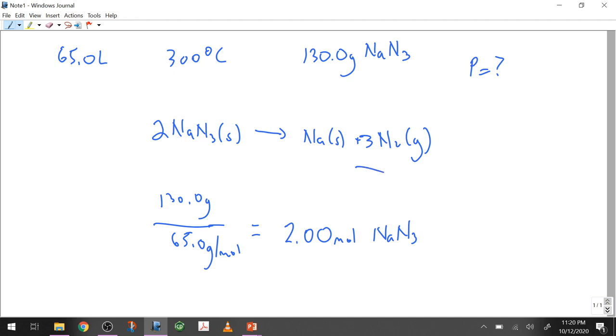Now, we need moles of this for the gas law because the gas law is about the moles of gas present, not the moles of the starting material that was not gas to begin with. So we're going to have to convert that using the three to two ratio. So I have three moles of N2 for every two moles of NaN3. So I get exactly 3.00 moles of nitrogen gas. So remember, we're talking about 300 degrees C, 65 liter airbag.